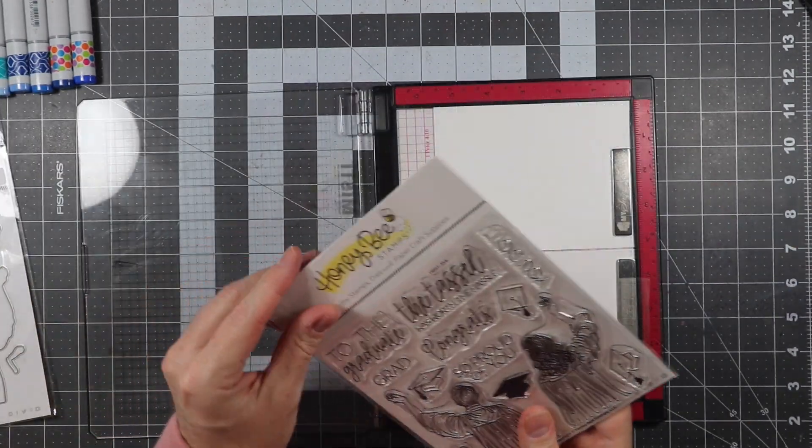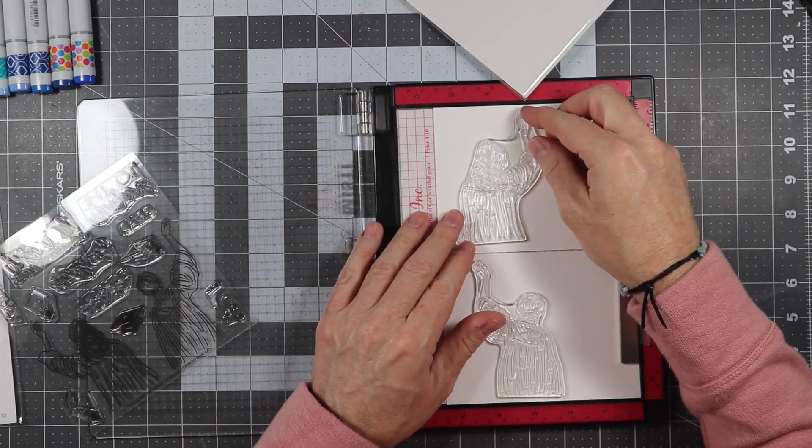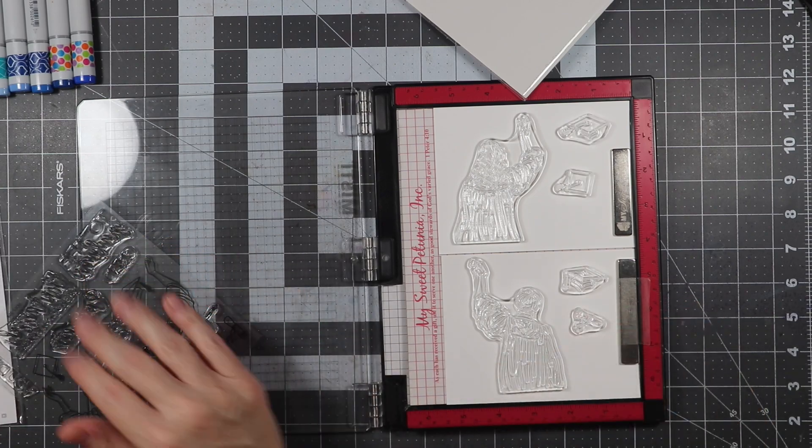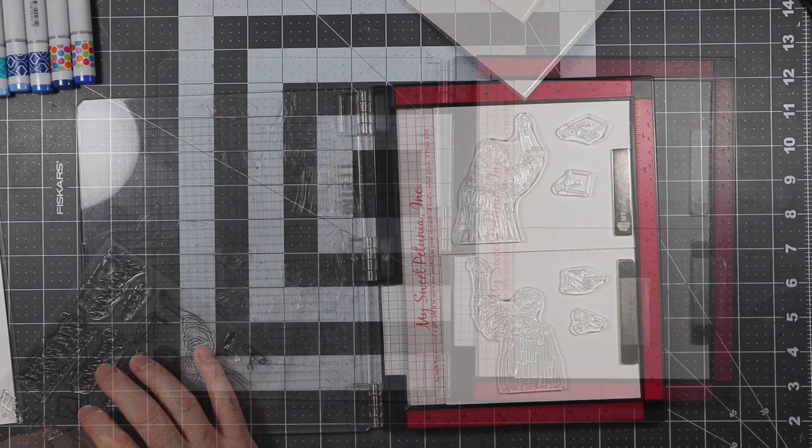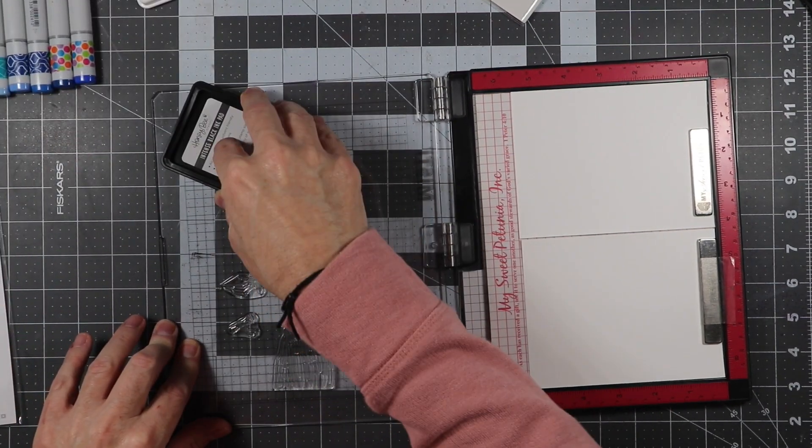Now the first thing we're going to do is go ahead and get the stamps stamped out on the paper. We're going to go ahead and put the male and the female here along with the hats. There were some parts that I stamped out that I did not use for this. I believe it was maybe the diploma.